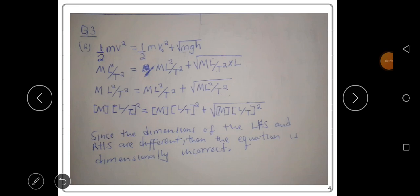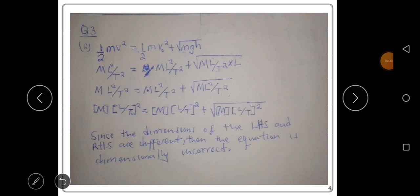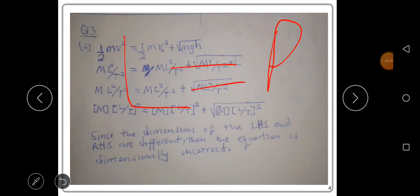We can see that the left-hand side and the right-hand side of the equation are different. Since the dimensions of both sides differ, the equation is dimensionally incorrect. For an equation to be dimensionally correct, the left-hand side must equal the right-hand side.